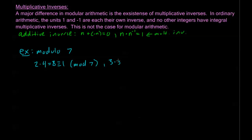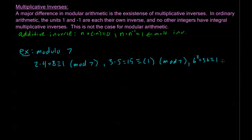3 times 5 equals 15, which is congruent to 1 mod 7. And 15 is congruent to 1 mod 7. Also, 1 in the regular integers and in modular arithmetic is always its own inverse — 1 times 1 is always 1, always congruent to 1. And we have one more: 6 squared equals 36, which is congruent to 1 mod 7.